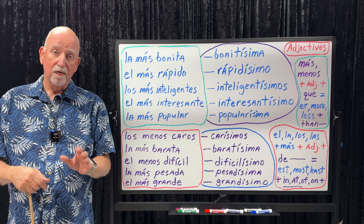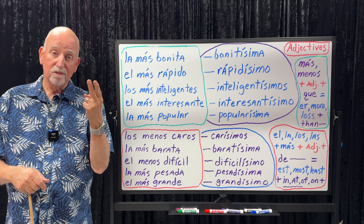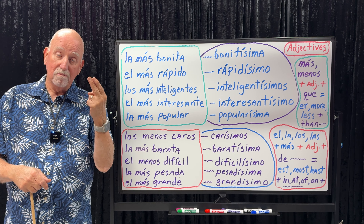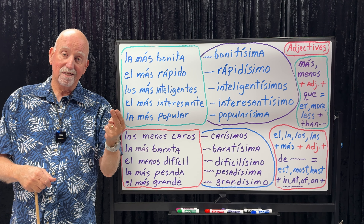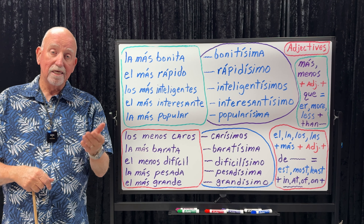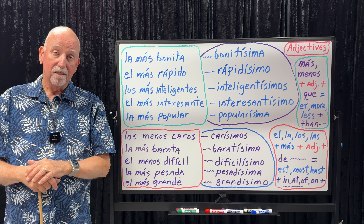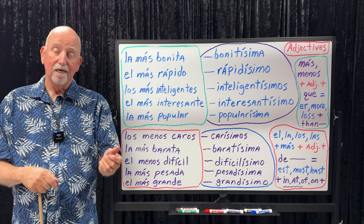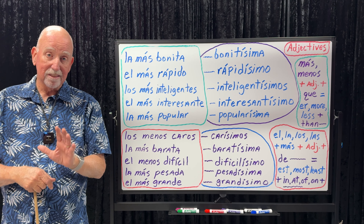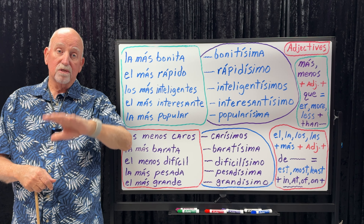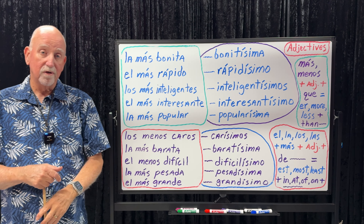Those terms are not important. You want to know how to take any adjective in its basic form and turn it into an -ER or a more — like more popular, más popular; more intelligent, más inteligente; smarter, más inteligente. And take an adjective and put it in the -EST form or the most form — the prettiest, la más bonita; the smartest, el más inteligente. That's all that counts: being able to turn any adjective into an -ER or a more, and then into an -EST or a most.